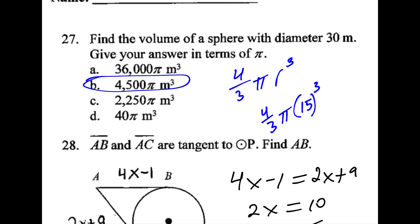Volume of a sphere is 4 thirds pi r cubed. Plug in r. Leave your answer in terms of pi.